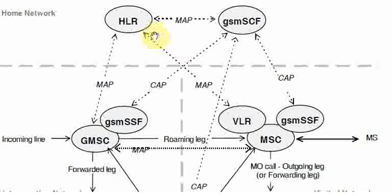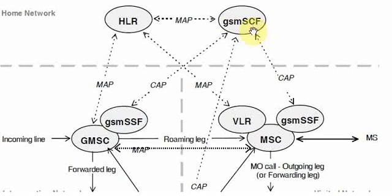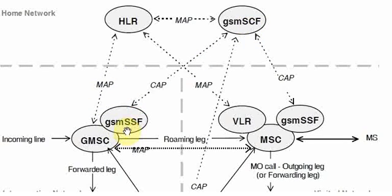As per the architecture, there are three parts of the network: one is home network, second is interrogation network, and third is visited network. There are some terminology that we are going to use here. GSM-SCF is GSM Service Control Function and GSM-SSF is GSM Service Switching Function.